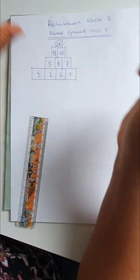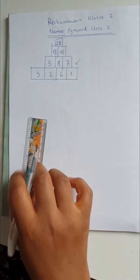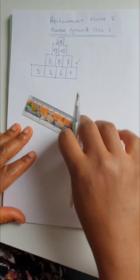Then 13 plus 15 is 28. Check. Now let's do a little bit more complicated numbers.